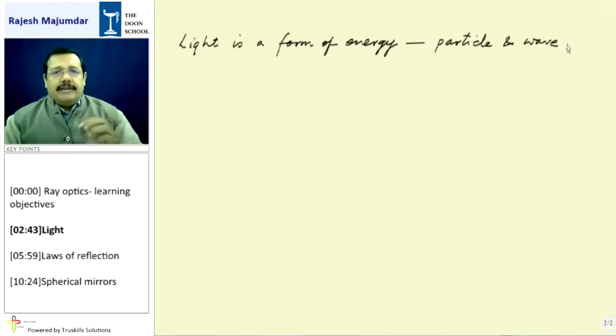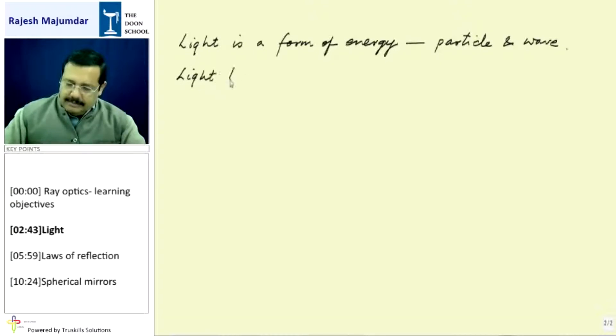And so light can be treated to be as particle and wave both. One more thing, light travels in straight line, we all know that.